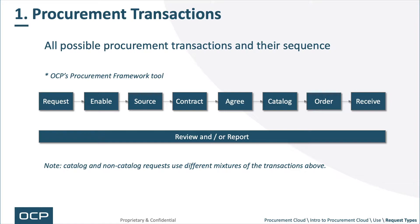Slide one: procurement transactions. Using the OCP Procurement Framework tool, this lists all the possible transactions within FPC, or Fusion Procurement Cloud: request, enable supply — which includes suppliers and pre-purchase contracts — sourcing, contracting, agreeing, cataloging, ordering, receiving, and reporting and analytics. Note that catalog and non-catalog requests use different mixtures of these transactions, and for non-catalog requests, business rules further delineate different transaction mixtures from deployment to deployment.